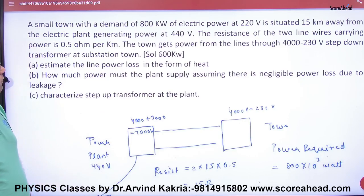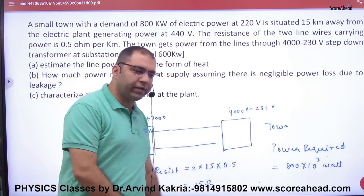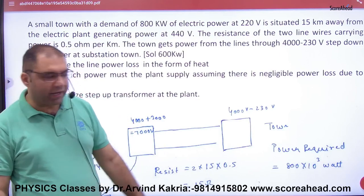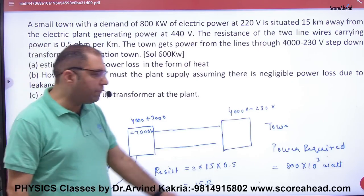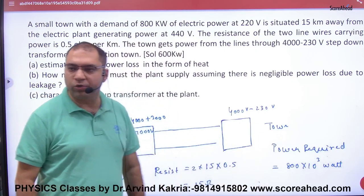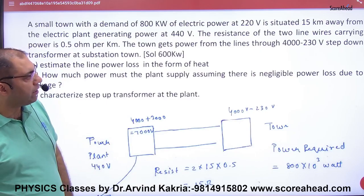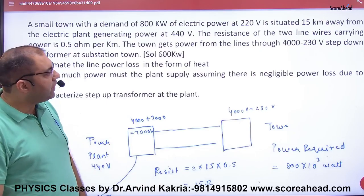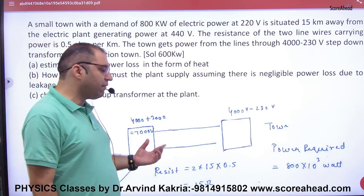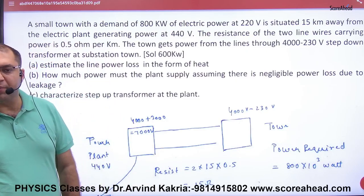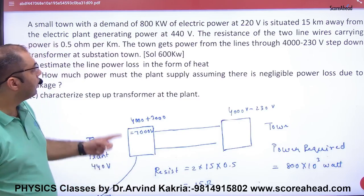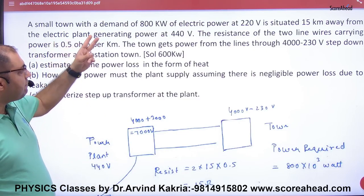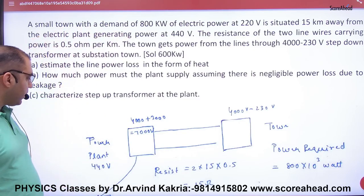A small town with a demand of 800 kilowatt, 800×10³ watts power required at 220 volts, is situated 15 km away from the electric power station which is generating power at 440 volts.